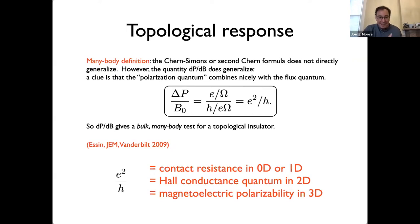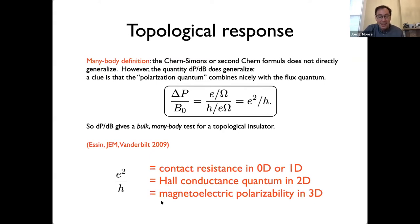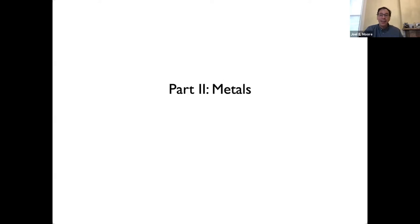In every dimension, e²/h means something: it's a contact resistance or 1D channel conductance, the Hall conductance quantum in 2D, and the quantum of magneto-electric effect in 3D. That's the most advanced thing I could say about insulators from an electromagnetic response point of view. I'll pause now — if anyone has questions please put them in the Q&A and I'll try to answer them.